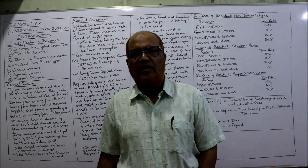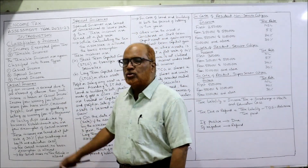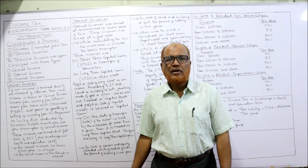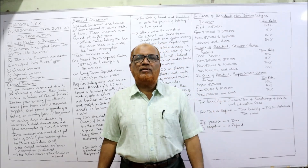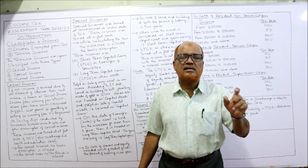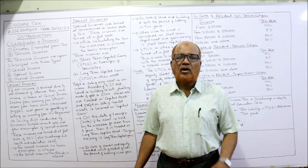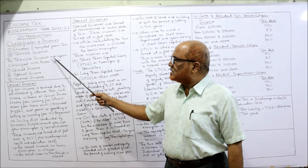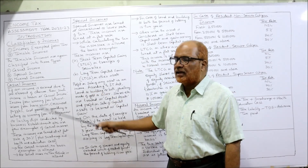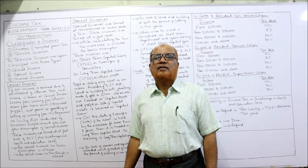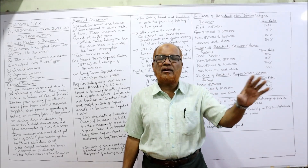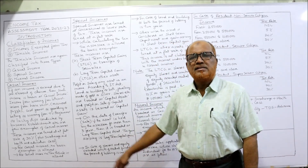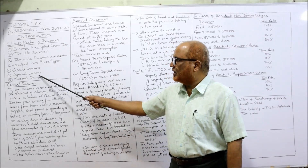Classification of incomes: incomes are classified into two types — incomes exempted from tax and taxable income. In a coming video I'll cover incomes completely exempted from tax. Now we concentrate only on taxable incomes. Taxable incomes are classified into three categories: casual income, special income, and normal income.